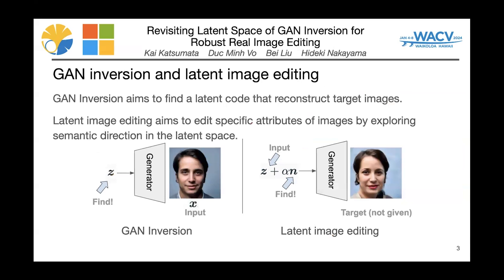GAN inversion aims to invert given images back into the latent space of pretrained GAN models, so that the image can be effectively reconstructed from the inverted code by the generator. GAN inversion makes the controllable directions found in latent spaces of existing pretrained GANs applicable to editing real images by moving the latent code along specific directions. These techniques are referred to as latent image editing.